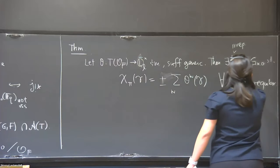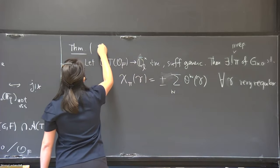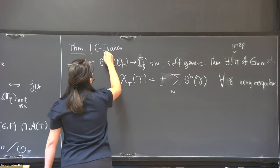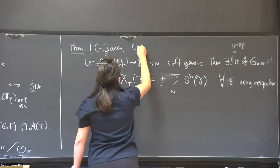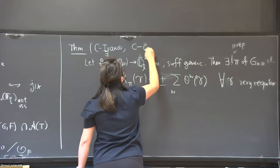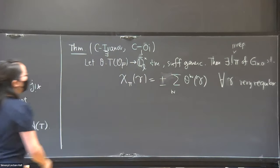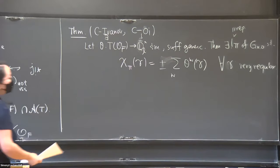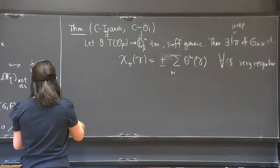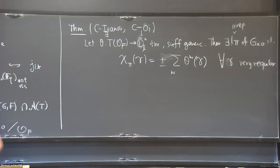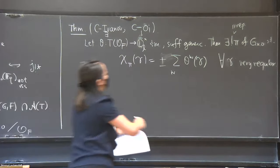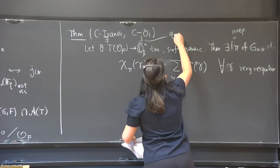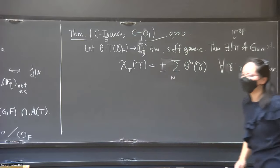There are two statements here: existence and uniqueness. Existence is due to myself and Alexander Ivanov, and uniqueness is due to myself and Marcel Eloï, a few years apart. So let me tell you about this. Uniqueness will always require q to be large enough; existence doesn't.